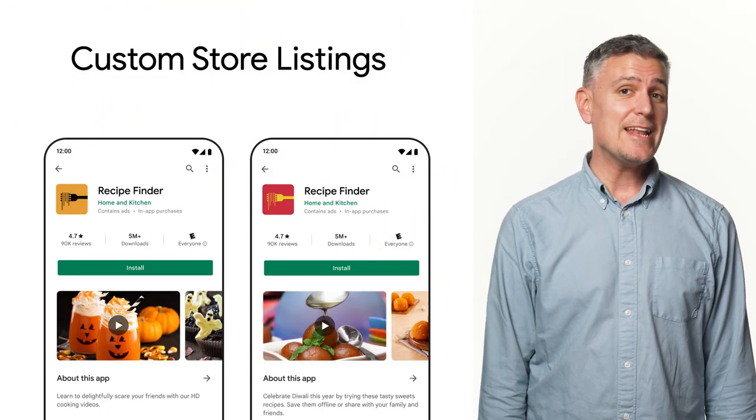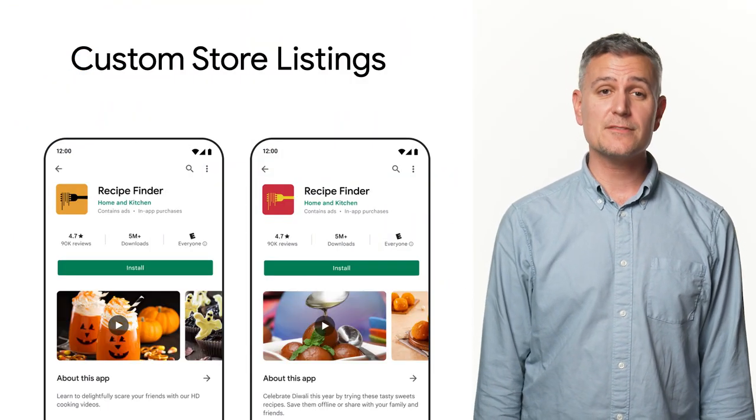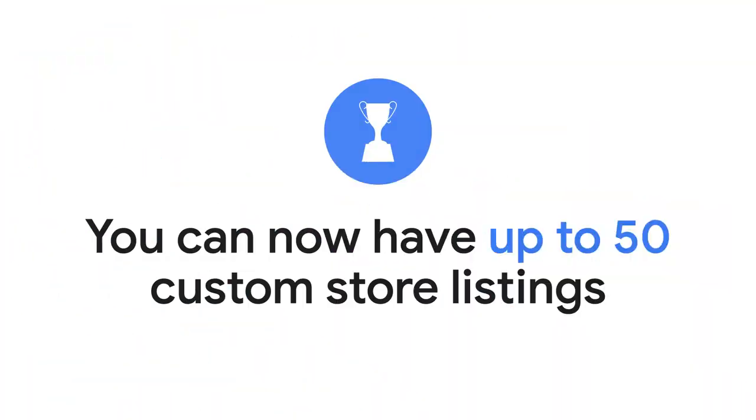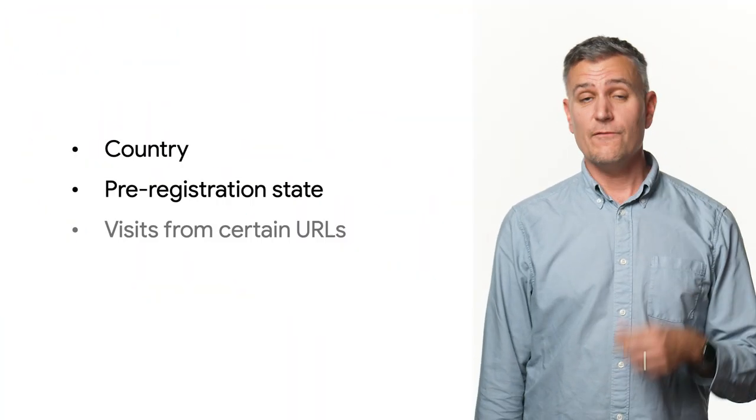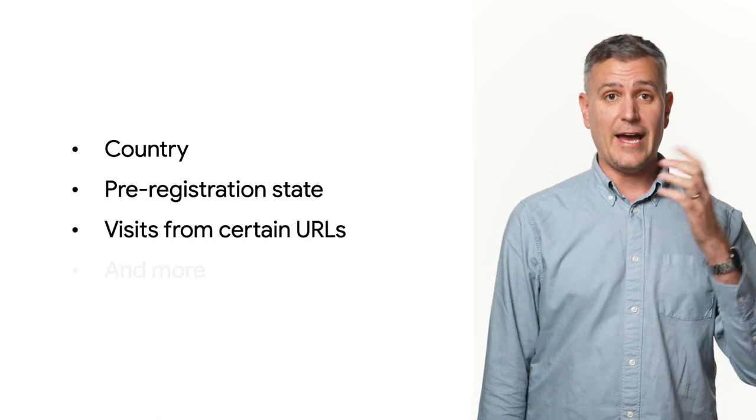Custom store listings are a way to tailor your app's store presence to appeal to specific user segments. You can create up to 50 custom store listings for each of your apps, allowing you to target users by country, pre-registration state, visits from certain URLs, and more.